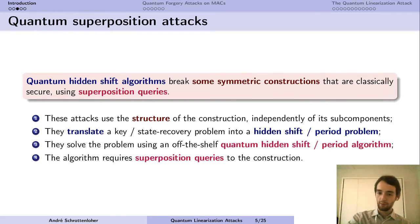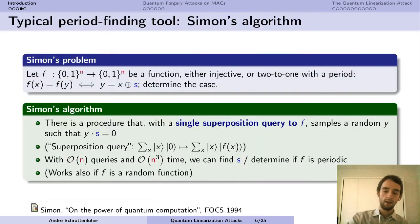A typical tool that we use and the one that we're going to use today is Simon's algorithm. It solves the following problem. You have a function and the function has a period, or it is either injective or it is two-to-one with a period, a boolean period, so if you take x and if you take x XOR your period you have the same image. And you want to determine the case or to find the period if it exists. Now Simon's algorithm is really powerful. With a single superposition query to f you can sample a random vector that is orthogonal to the period.